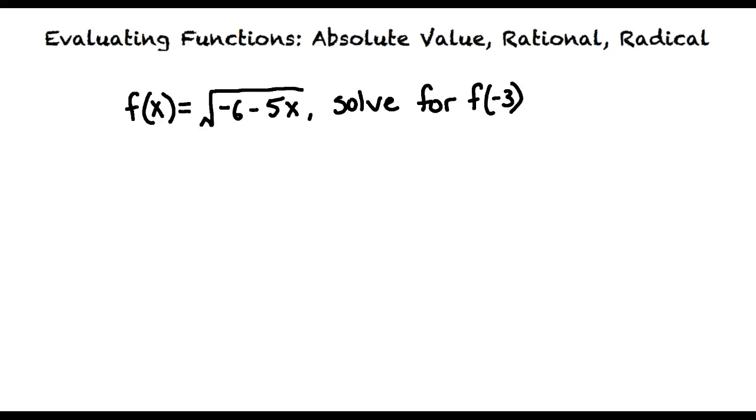Yes, that is correct. When we substitute negative 3 for x, we get square root of negative 6 minus 5 times negative 3. Then we simplify this expression like a normal square root problem. Following the order of operations, negative 5 times negative 3 is positive 15, and negative 6 plus 15 results in 9.